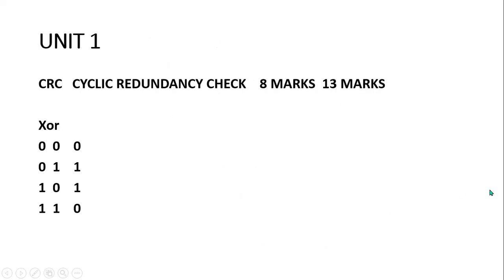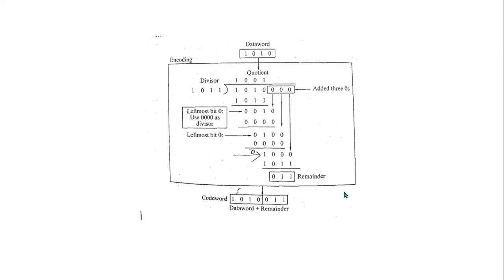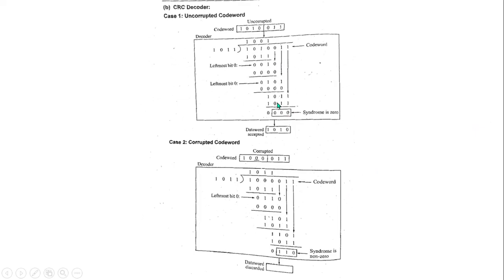That's the CRC problem. This problem is just one polynomial format. Post all important questions in this unit in the description box. In the next video, we will continue with the CRC problem. Just one way: encoder and decoder. Encoder method output is 0. We will use the decoder method. In the decoder method, we will solve the CRC problem. Thank you for watching this video.